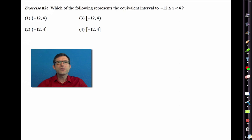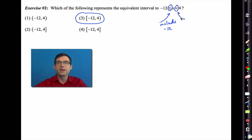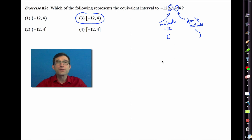Exercise two: which of the following represents the equivalent interval to the given inequality? The correct answer uses a bracket on negative 12 because it's included due to the equal sign, and a parenthesis on 4 because the strictly less than sign means 4 is not included. To include, use the bracket; to not include, use the parenthesis.